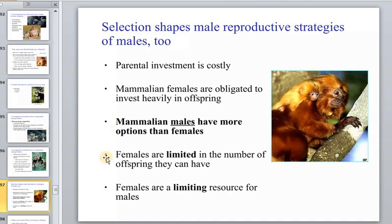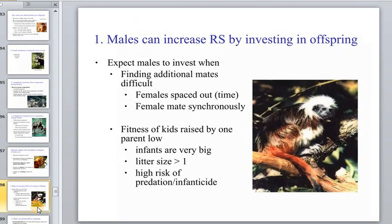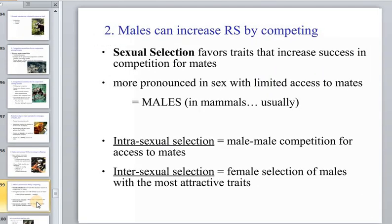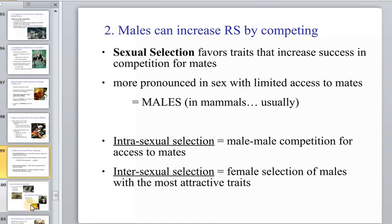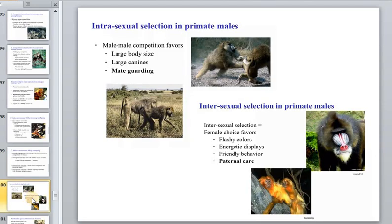Mammalian females are obligated to invest heavily in offspring and have more reproductive options than males in this sense. Males are limited in the number of offspring they can have, and females are a limiting resource for males. Males can increase reproductive success by investing in offspring or by finding additional mates. Sexual selection favors traits that increase success in male-male competition.